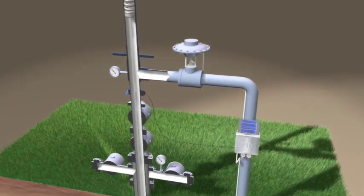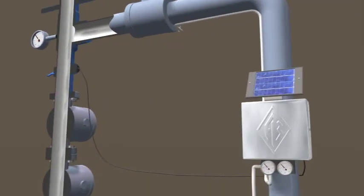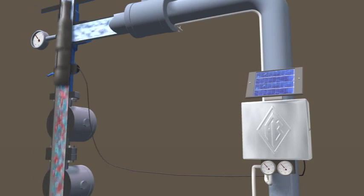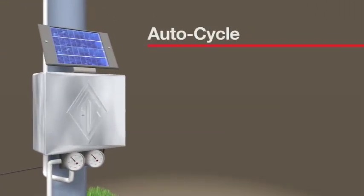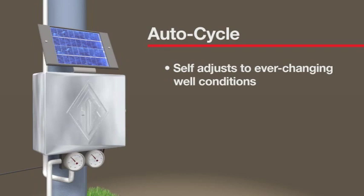And only Ferguson Beauregard goes still another step toward optimization. The revolutionary patented AutoCycle system monitors and optimizes each plunger lift sequence. This breakthrough technology allows for efficiency like never before. Instead of preset cycles that favor repetition over results, AutoCycle actually self-adjusts to the ever-changing well conditions.